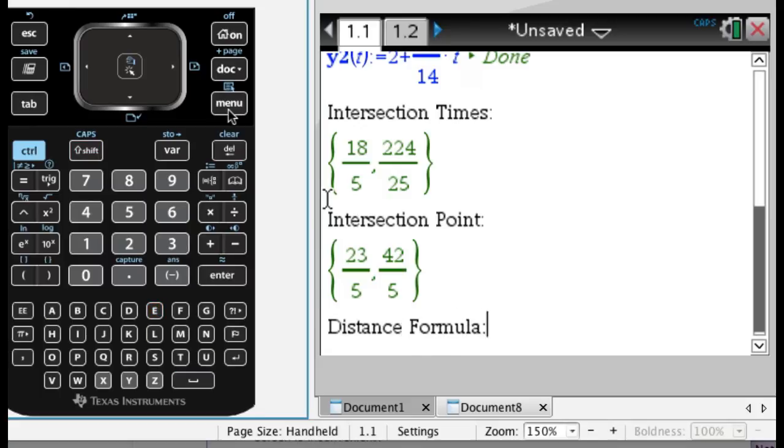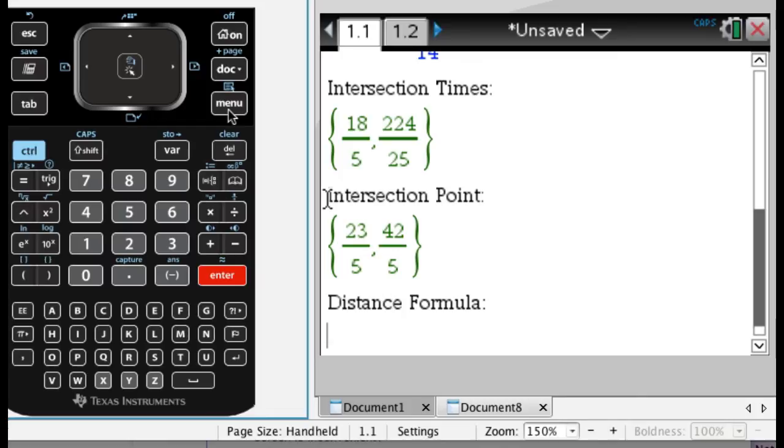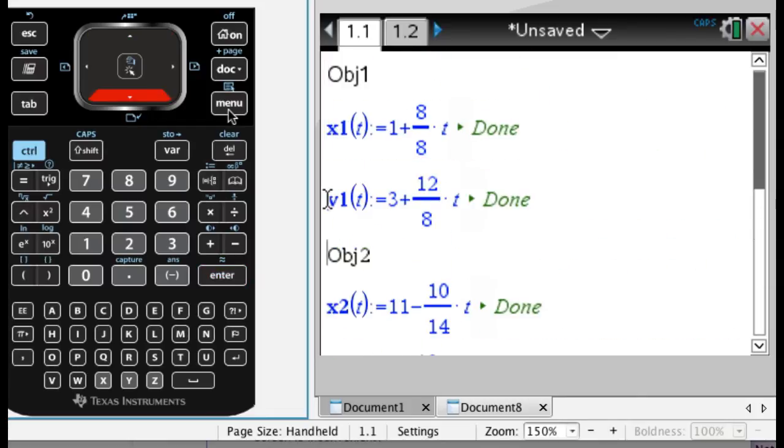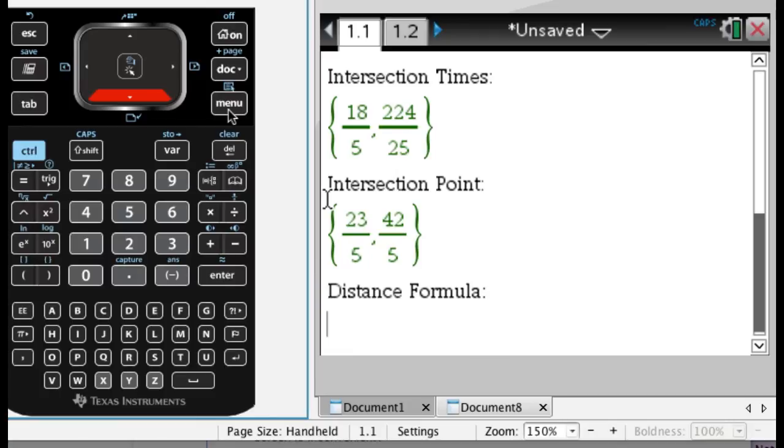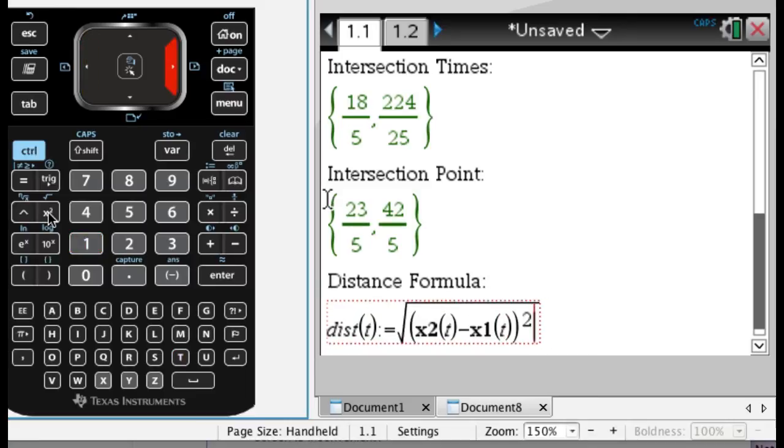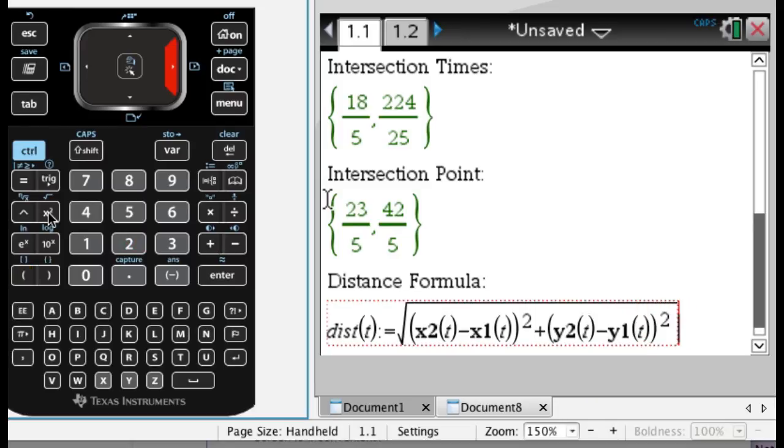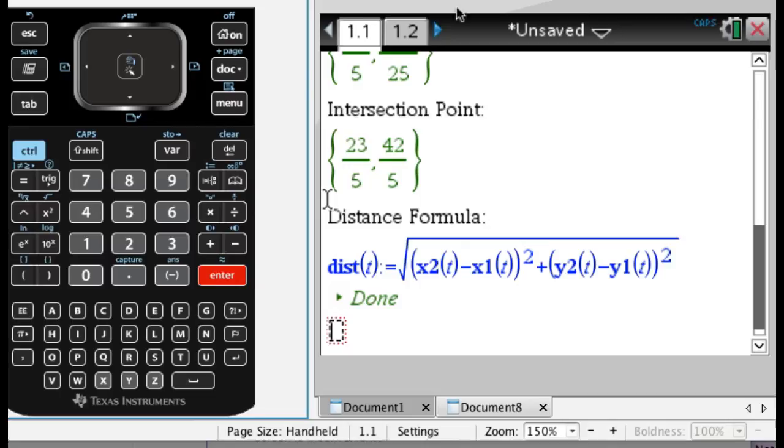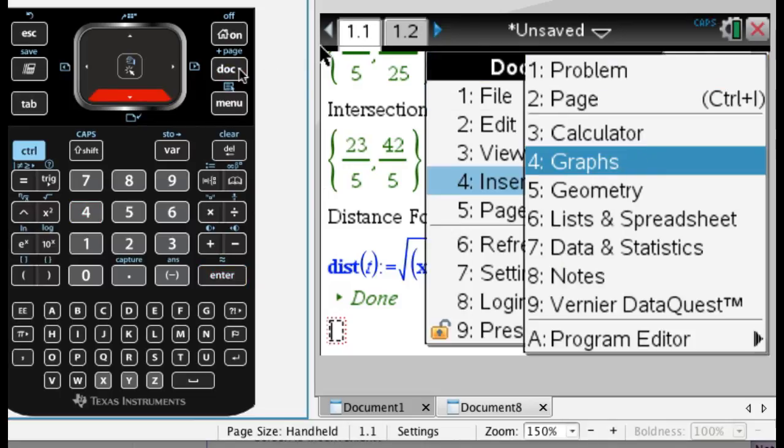And then the last thing that I would do is on this page I would just define the distance formula because what's going to happen is every time you change x1, y1, x2, or y2 it's going to update your distance formula for you and then that will be available for you to use in the graph page. So distance(t) and then you can just type it in so square root of (x2(t) - x1(t))^2, and then so this video runs a little long but I think I'm imagining that you can think of ways to use this that aren't just for parametric equations and it's kind of interesting so it's kind of worth it I think. So there's distance.